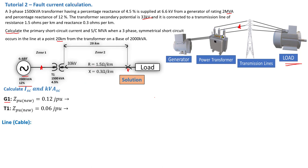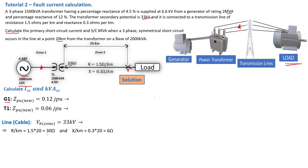The transmission line cable has a resistance of 1.5 ohm per kilometer and a reactance of 0.3 ohm per kilometer. Since the fault occurs at 20 kilometers, these values must be multiplied by 20. The zone voltage for this section is 33 kV. This gives R = 1.5 × 20 = 30 ohm, and reactance = 0.3 × 20 = 6 ohm for the 20 kilometer section.